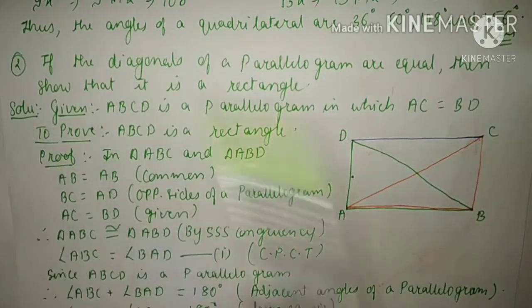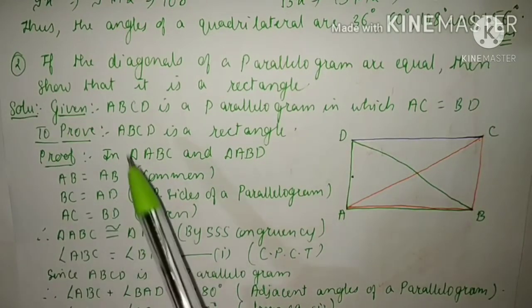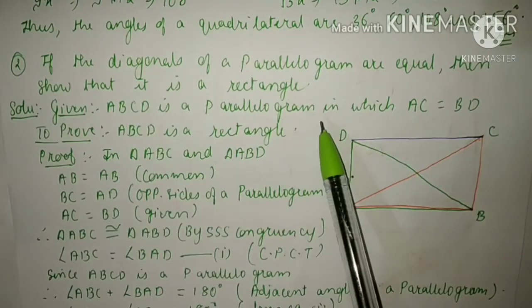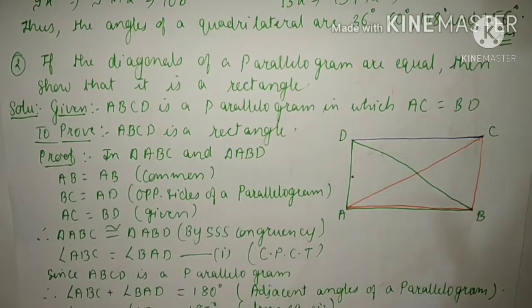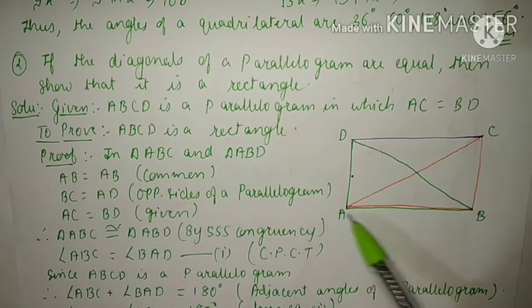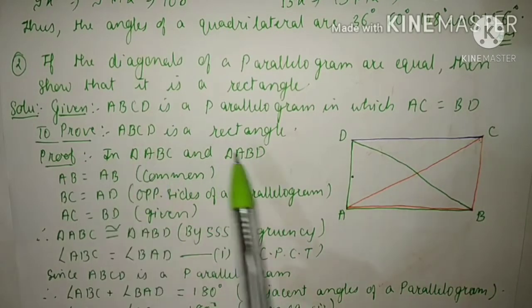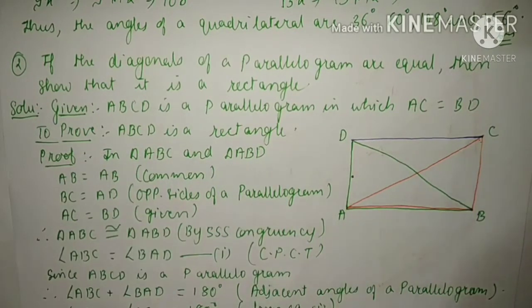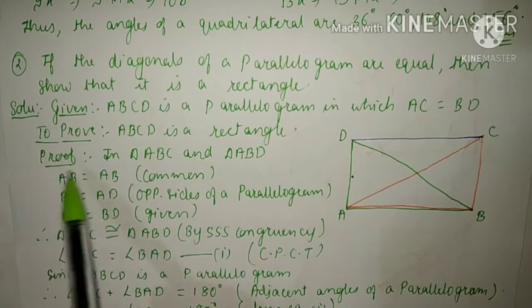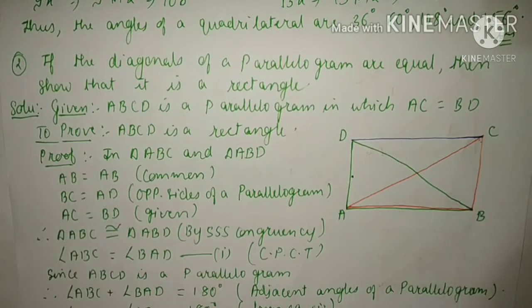First of all we will write what is given to us. ABCD is a parallelogram in which the diagonals are equal, so AC is equal to BD. Now we have to prove that ABCD is a rectangle. Let's see the proof.